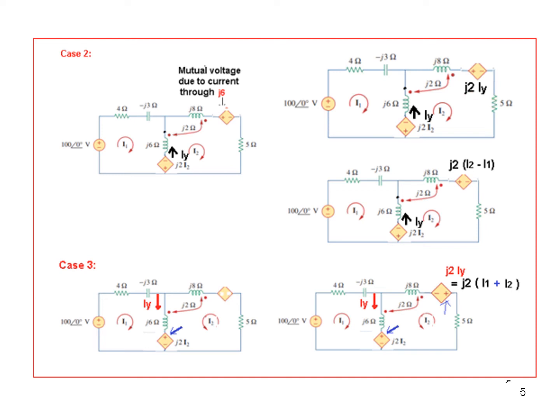And the value will be J2 and the current Iy. Now Iy, what is Iy from here? Here you can see it is going up. That means it is I2 minus I1. So for Iy we can write I2 minus I1. So this is one case. And if you just solve this problem with these values, you will get the same answer.